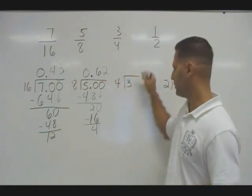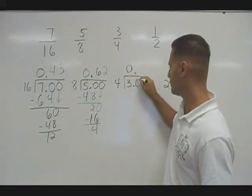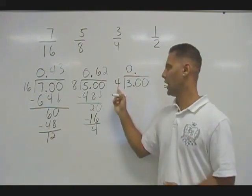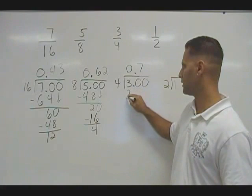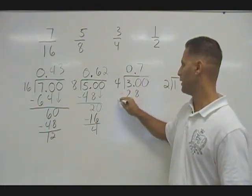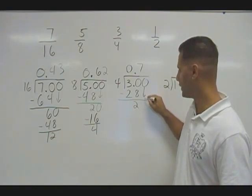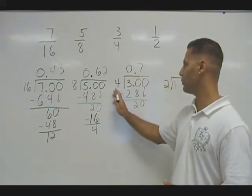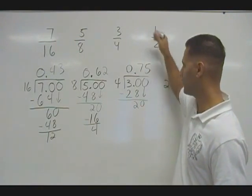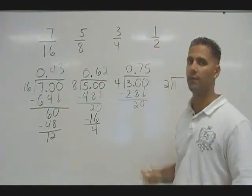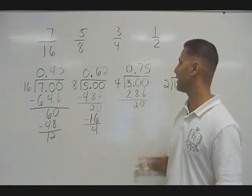Now let's take a look at three divided by four. Four cannot fit into three, so we put a zero here. Then I place a decimal and two zeros after the decimal. We can fit four into thirty seven times, giving us twenty-eight. That leaves us with two. We drop our zero from the hundredths place, and we can fit four groups into twenty exactly five times. So three-fourths is equivalent to seventy-five hundredths — and three-quarters, as we should know, would be seventy-five cents.